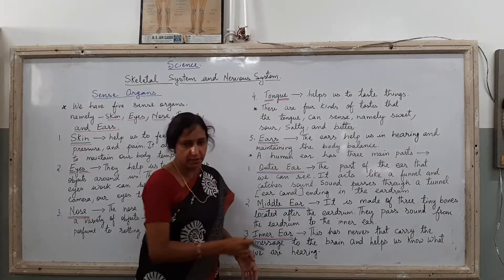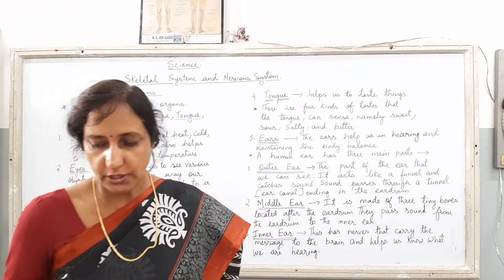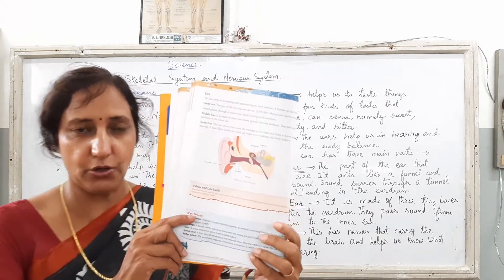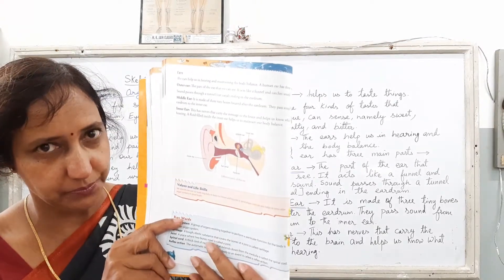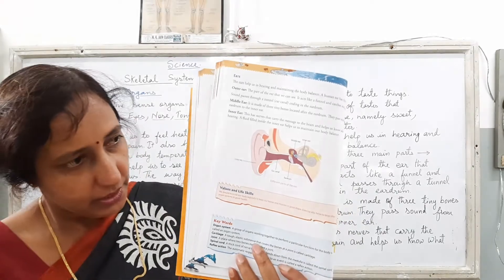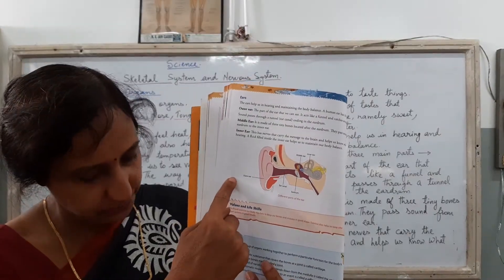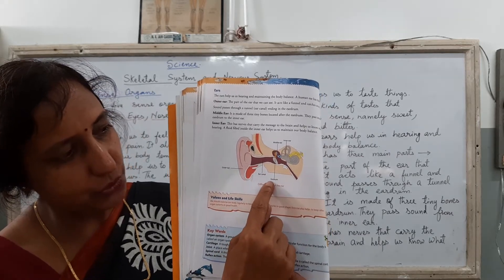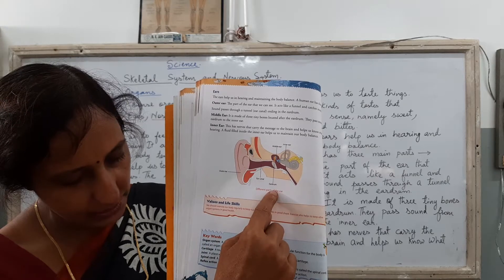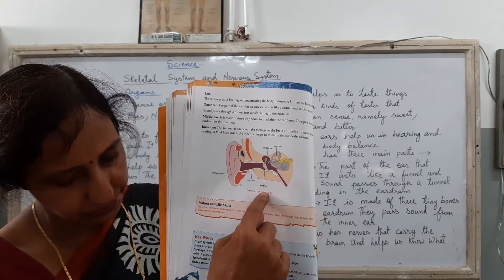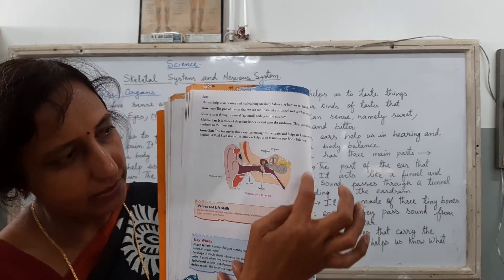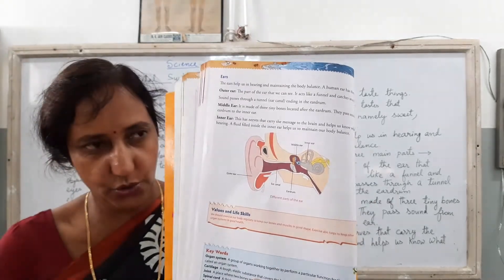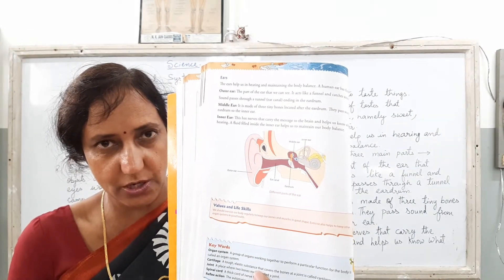For you all to know better, children, first you have to see the structure shown in your textbook. Just have a closer look at the internal part of the ear shown here. As you are seeing, they have shown you the outer ear, the middle ear, the ear canal, and the eardrum. And at the last, there is the inner ear. Just have a closer look at the diagram properly, the structure of the ear.